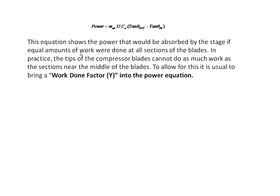This equation shows the power absorbed by the stage if equal amounts of work were done by all sections of the blades. In practice, the tips of the compressor blades cannot do as much work as the sections near the middle of the blades. To allow for this, it is usual to bring a work done factor, or efficiency factor, into the power equation. Therefore, the power absorbed by the compressor stage is the mass of air times the blade velocity U, times the axial velocity CA, times the work done factor ψ, times (tan θ_out minus tan θ_in).